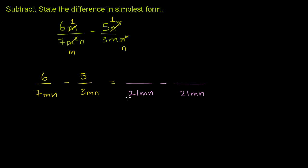To get from 7mn to 21mn, you've got to multiply by 3. And if you're multiplying the denominator by 3, you've got to multiply the numerator by 3. You get 3 times 6 equals 18. And to go from 3mn to 21mn, you've got to multiply by 7. If you multiply the denominator by 7, you've got to multiply the numerator by 7. So 5 times 7 equals 35.